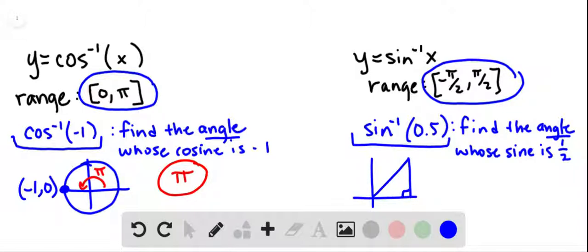The sine is 1 half, so the opposite would be 1 and the hypotenuse would be 2. And hopefully, you recognize that as a 30-60-90 triangle with a 30-degree reference angle. So the answer is 30 degrees, although we should give our answer in radians. So instead of thinking of it as 30 degrees, you think of it as π over 6.